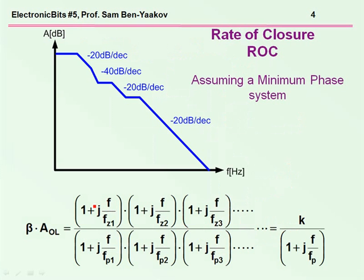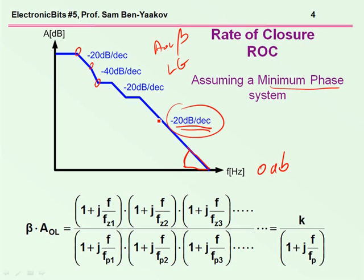Now, this implies that if we have a system which has, for the loop gain, or for the product A open loop times beta, which we call the loop gain, if it has some poles and then zeros, and if we approach the 0 dB line at a rate of minus 20 dB per decade, then for conventional or normal systems, which we'll define as minimum phase systems, one can immediately say that the system will be stable. That is, let me restate it again, if the so-called rate of closure, the way we approach the 0 dB line, is minus 20 dB per decade, the system will be stable.